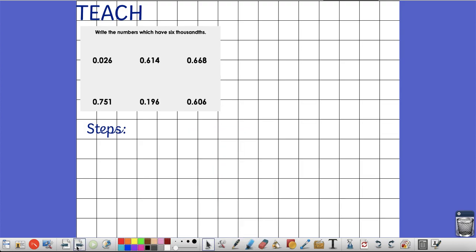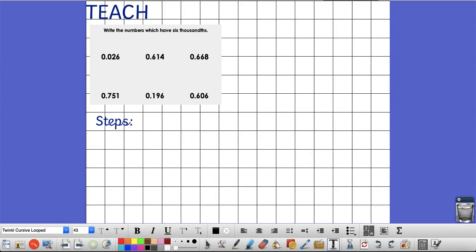Okay, so let's look at our next question. It says, write the numbers which have 6 thousandths. So to do this question, we need to have a look at the place value of the thousandths column. Now remember, the thousandths column is the third column right from a decimal point. So have a look at each number and see and write down which ones have 6 thousandths. So you pause the video there, have a go at that question, press play when you are ready to move on.